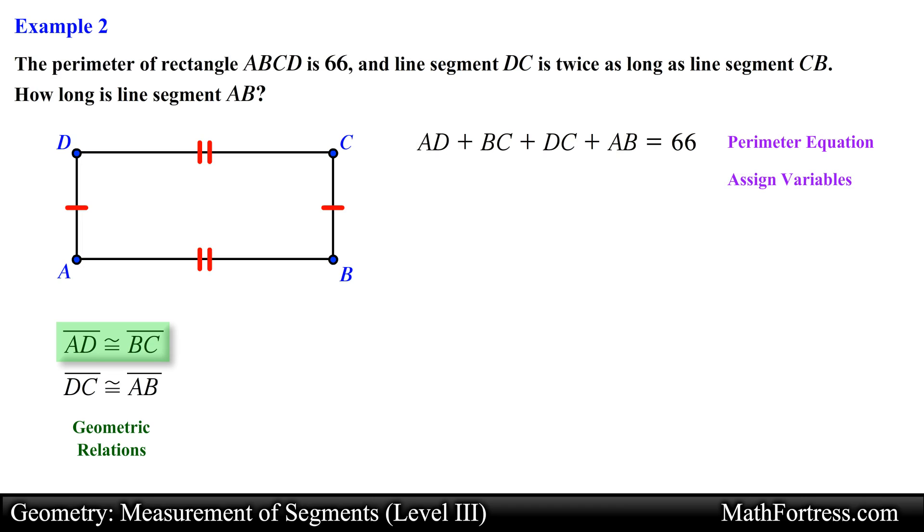Since line segment AD and line segment BC are congruent, we can use the variable x to represent their length. Similarly, we can use the variable y to represent the length of segment DC and segment AB. Substituting these variables into our perimeter equation and simplifying, we obtain the following.